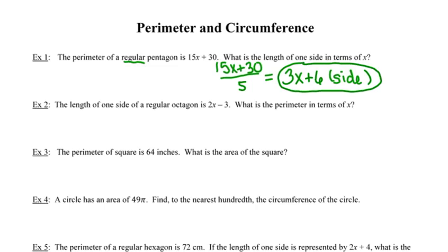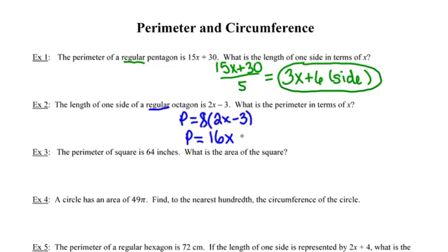Number 2 uses a similar idea, but now we're given the length of one side of a regular octagon and asked to find the perimeter. Since all eight sides are equal, we take the side length of 2x minus 3 and multiply by 8. Using the distributive property, the perimeter of the octagon is 16x minus 24.